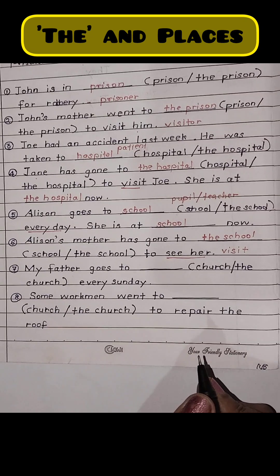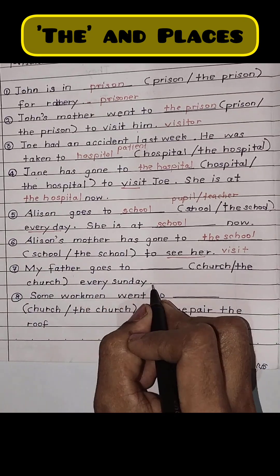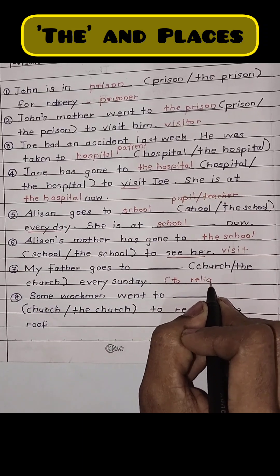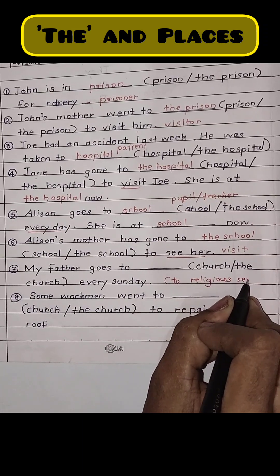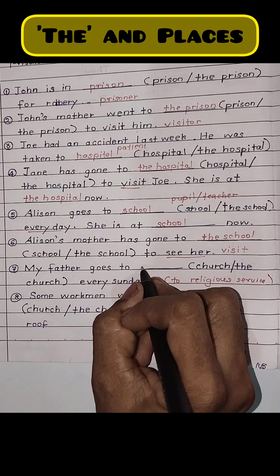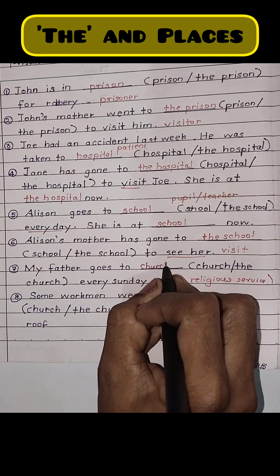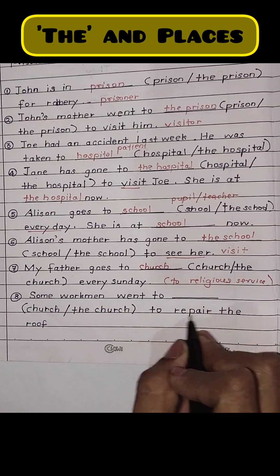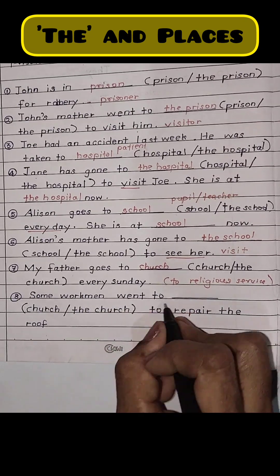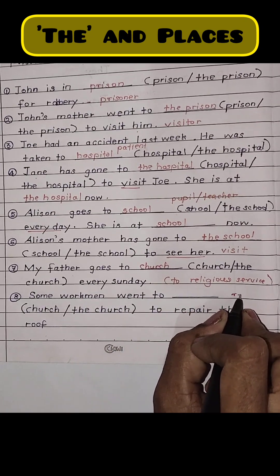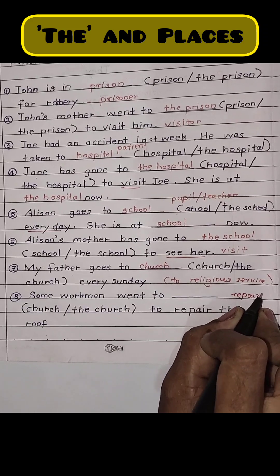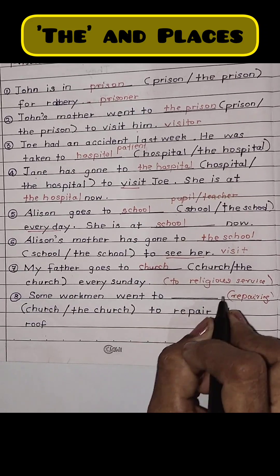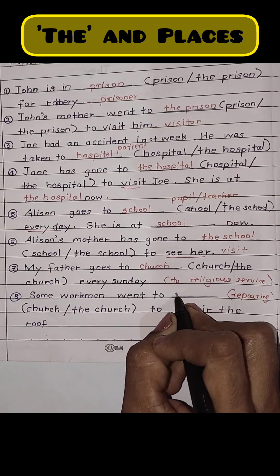My father goes to blank every Sunday — so for a religious service my father is going to 'church'. Some workmen went to blank to repair the roof — so the workmen are going for a repair service, not for religious work, so it must be 'the church'.